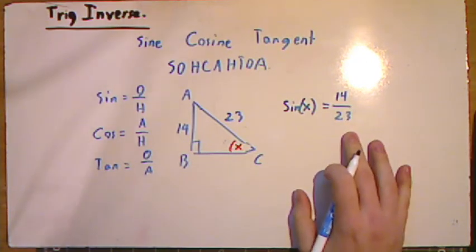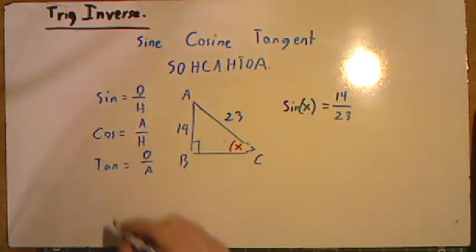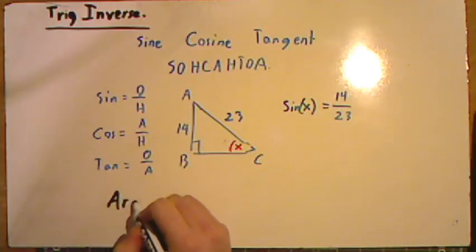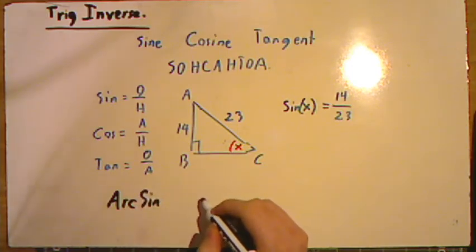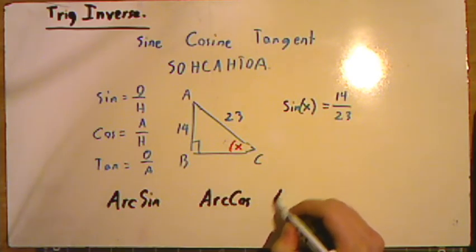At that point then, we introduce this new knowledge we have, being the arc sine, the arc cosine, and the arc tangent. Ultimately, it should be very easy to remember, because it's just putting arc in front of our already existing trig functions, and these are our inverse functions.